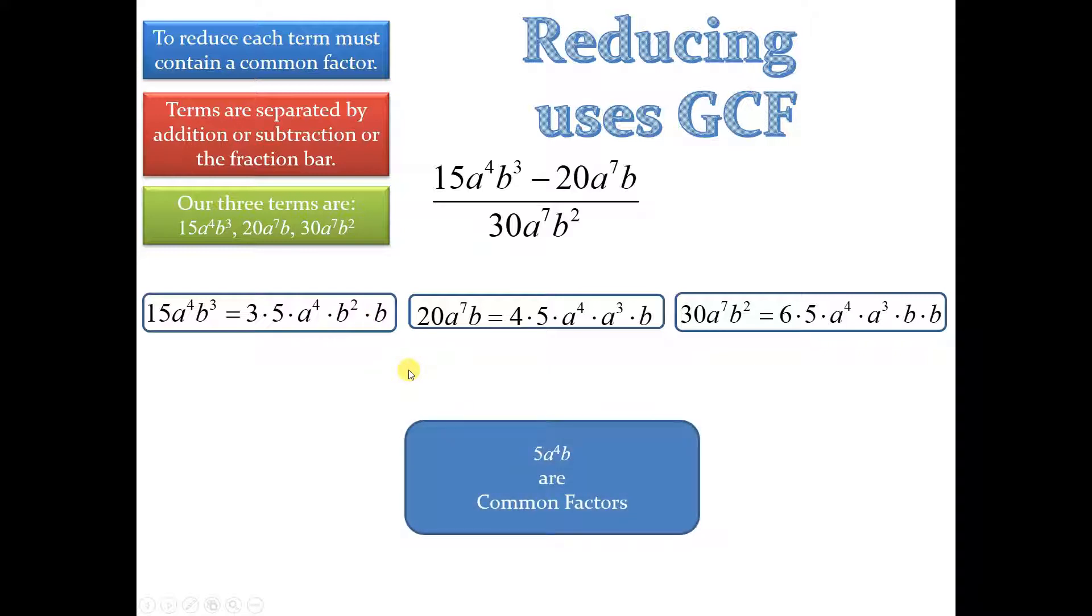Now, the thing they all have in common is 5a to the 4th times b. You see, they all have a 5. And we're going to divide that out. So, I'm just going to go ahead and scratch them off right here. And they all have a to the 4th. So, I'm going to go ahead and get rid of those as well. And they also all have a b.